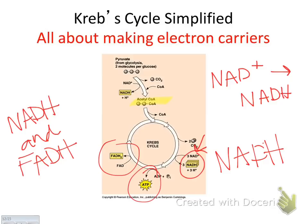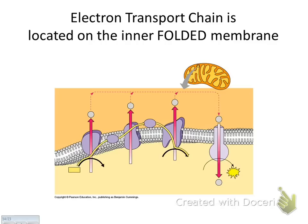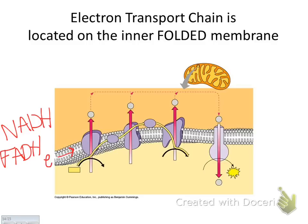Moving on to the third step of cellular respiration — the electron transport chain. You've seen this before from photosynthesis, though this time it's oriented upside down. The NADH and FADH2 made in the Krebs cycle drop off their electrons here. Unlike photosynthesis where electrons came from water, this time the electrons come from NADH and FADH2. The electrons go down the electron transport chain and bind with oxygen, and that makes water — which is where the water in the cellular respiration equation comes from.